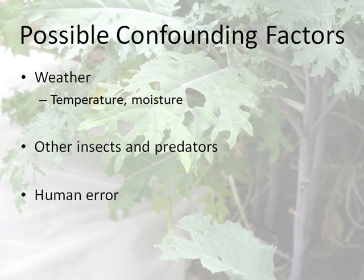Another important thing to consider when looking at the scientific method and analyzing the results of an experiment are possible confounding factors. A confounding factor is something that you didn't have control over in the experiment, or weren't carefully observing, that might have affected the results — and therefore changed the interpretation of those results.